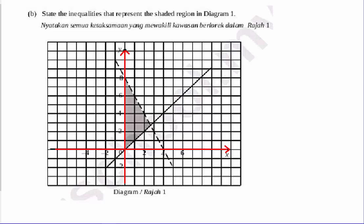The first thing is, whenever you want to form the equation, you need to understand y equals to mx plus c, because this is how we form the equation of a straight line — sometimes called a linear line. In order to find the inequality, you basically need to find the three straight lines in this diagram. I call them line one, line two, and line three.